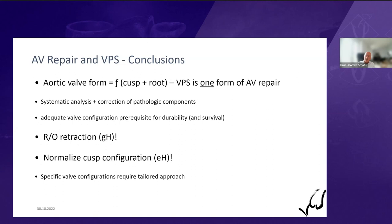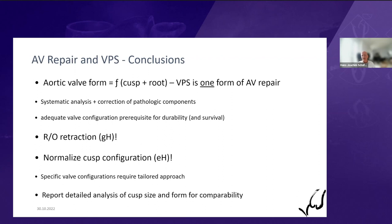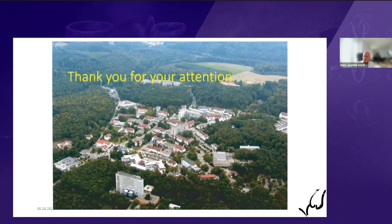Systematic analysis and correction is logical, and it is also logical that adequate valve configuration translates into durability. Practically speaking, the most important step is to rule out retraction as a poor substrate for repair — this is where geometric height has been very helpful. Normalizing cusp configuration using measurement of effective height has been very reproducible and is increasingly adopted by groups around the world. Specific valve configurations must be kept in mind for a tailored approach, and surgeons should report more details of valve geometry analysis to make findings reproducible. Thank you for your attention.